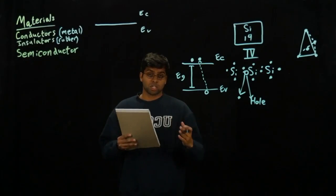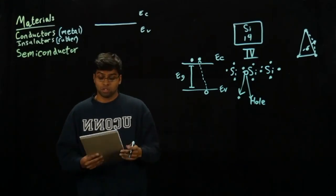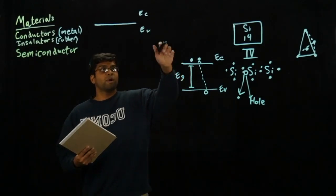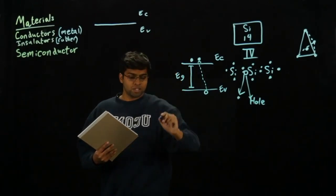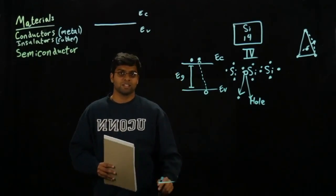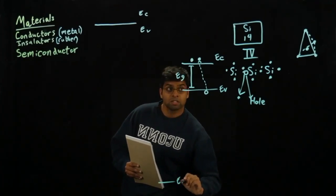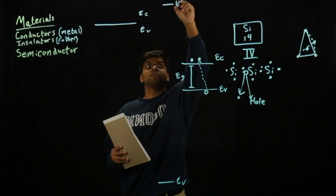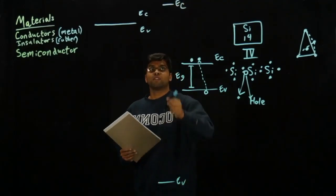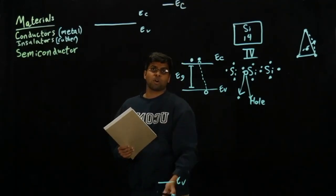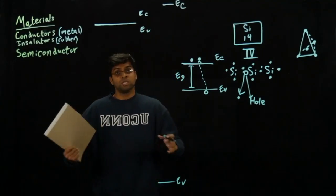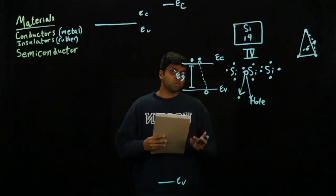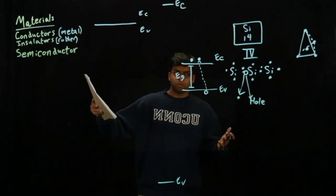On the other hand with insulators, if I want to compare this band gap, insulators will have the valence band down here and the conduction band up here. The amount of energy required is so large that these materials are never going to actually conduct.